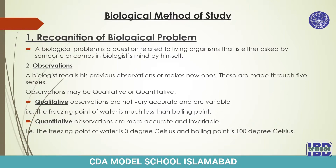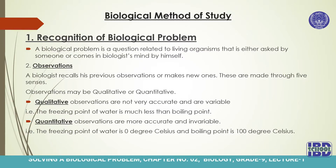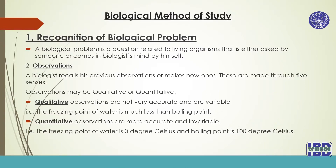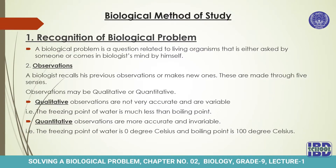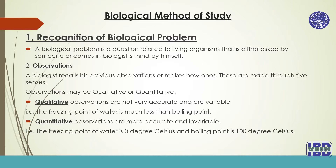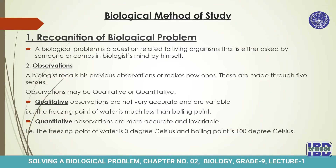Quantitative observations are more accurate and invariable — for example, the freezing point of water is zero degrees Celsius and the boiling point is 100 degrees Celsius. Comparing these two types, qualitative observations are not accurate because we do not use numbers or digits. In quantitative observations, digits are used — for example, the freezing point of water is zero degrees and the boiling point is 100 degrees Celsius. That is why quantitative observations are considered more accurate and invariable.